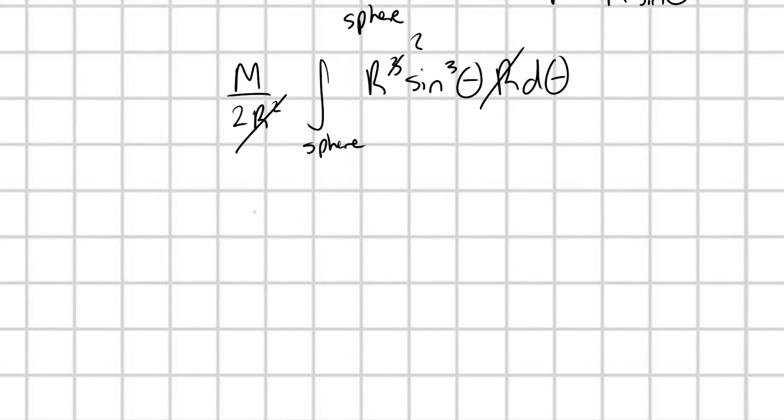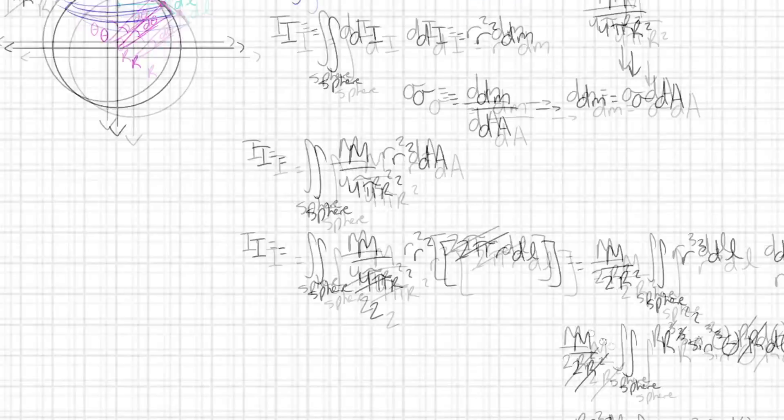So I have r squared m over 2 integral sine cubed theta d theta. And what about the boundaries of our integration? Where is theta going to range from?